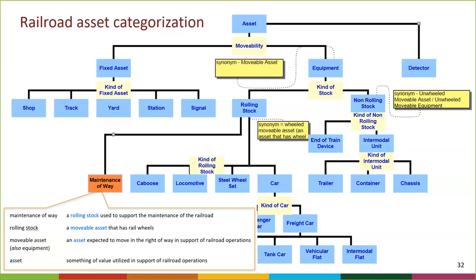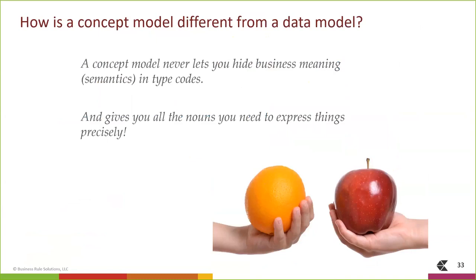Here's another difference between concept models and data models: concept models force you to see type codes for what they really are — pure data constructs, pure IT-speak, not business-speak. Why do we have them in data design? A big part of the reason is legacy: once upon a time, space was limited. Type codes would really kill business communication. In today's world, clear communication about business knowledge is far more important than compact data schemes. Categorizations give you exactly the right nouns you need to express business thoughts precisely.